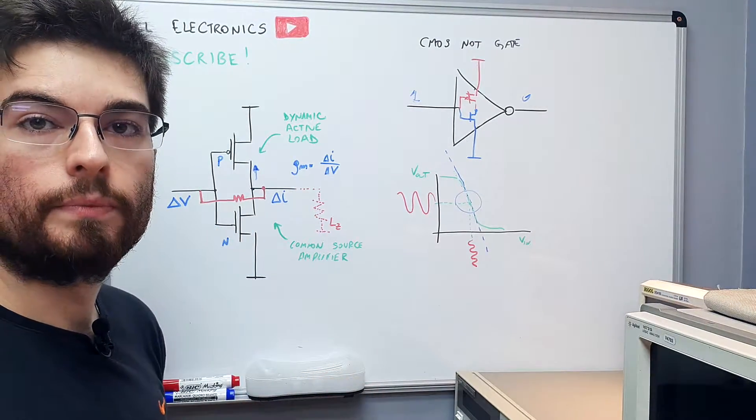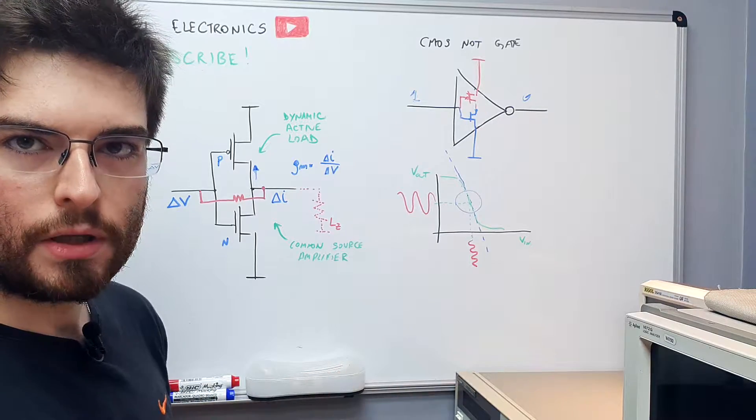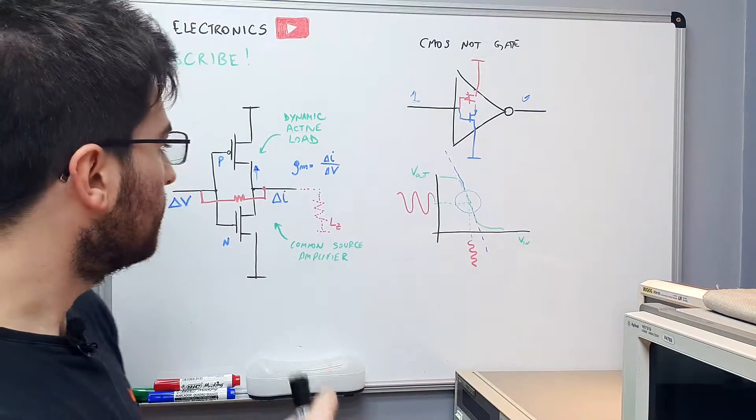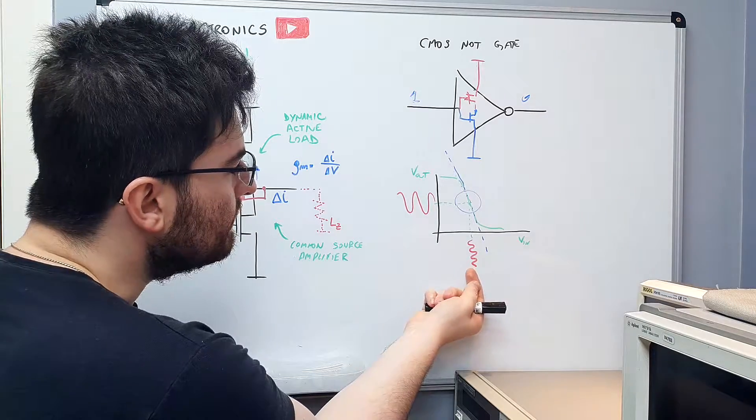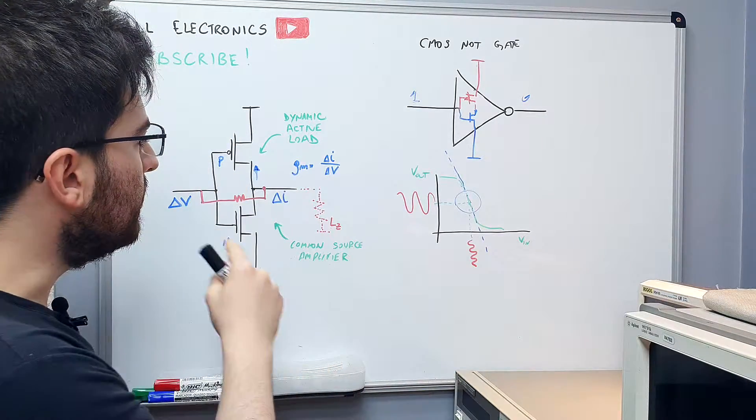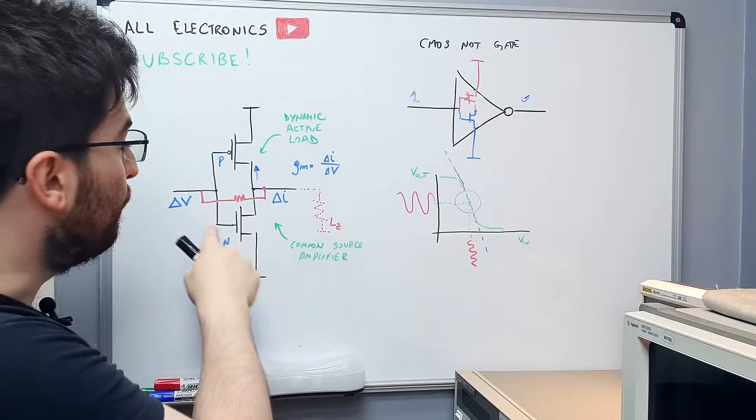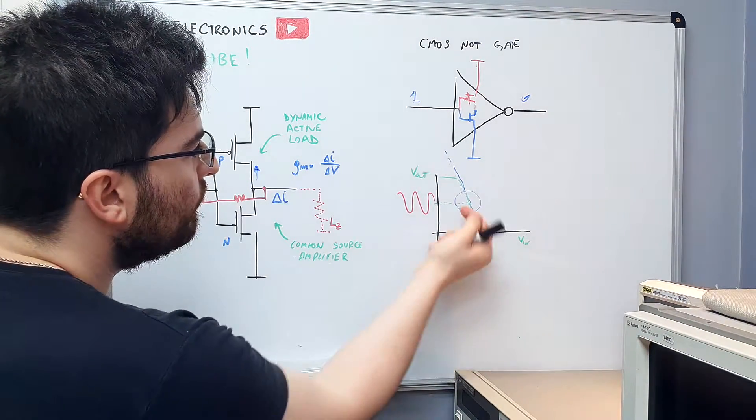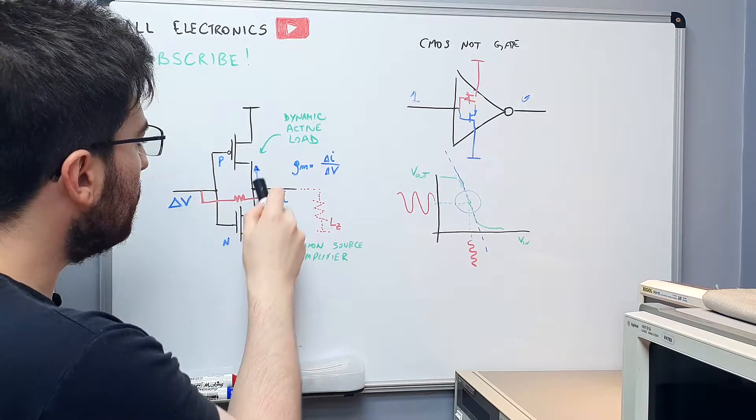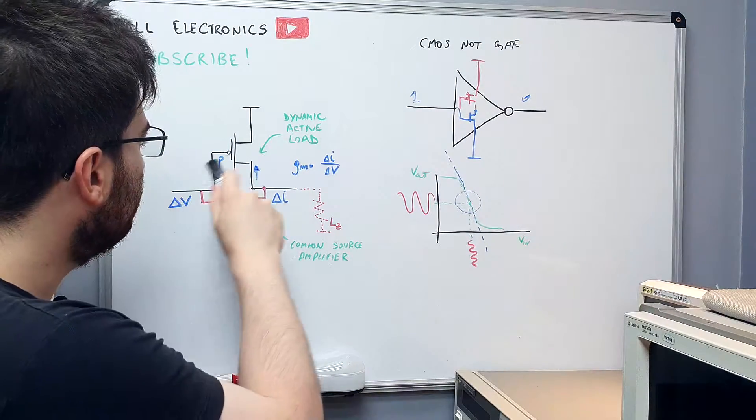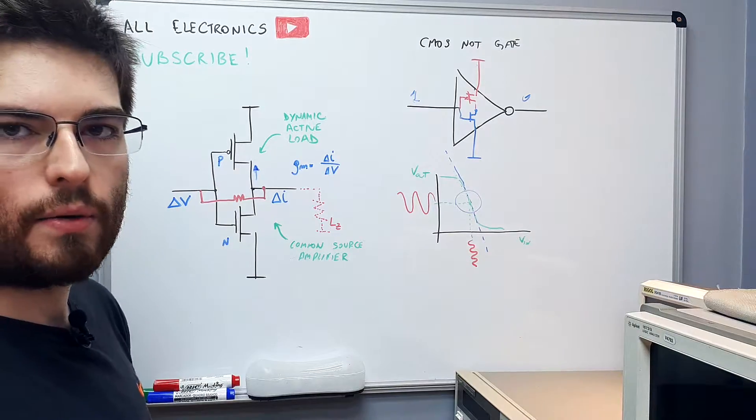This resistor feedback at DC will stabilize the biasing of this arrangement in half VCC because it's the only condition where output equals input. We force the condition of half VCC with this simple resistor as a feedback loop around this MOS arrangement.